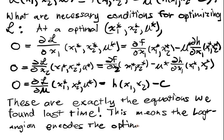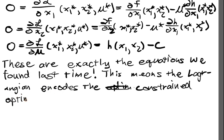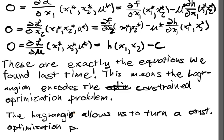This means that the Lagrangian encodes the optimization problem, the constrained optimization problem, and allows us to turn a constrained optimization problem into an unconstrained optimization problem.